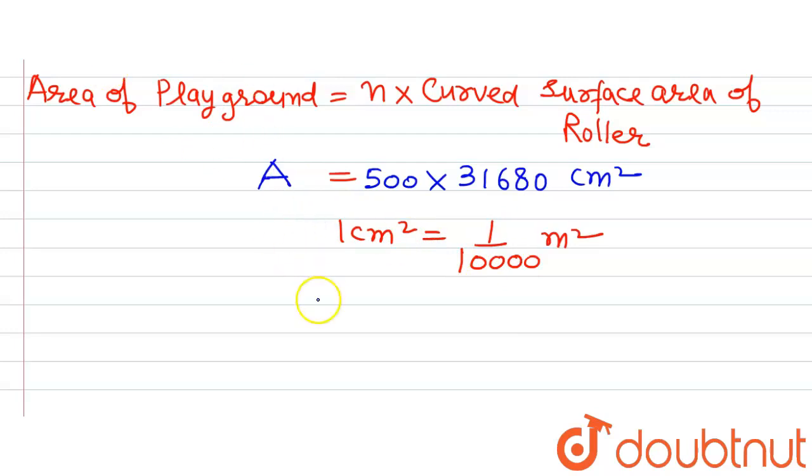Putting it above, we will get A, the area of playground, equal to 500 multiplied by 31,680, which gives us 15,840,000 cm square.